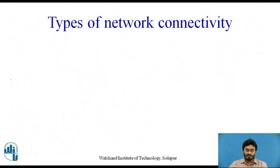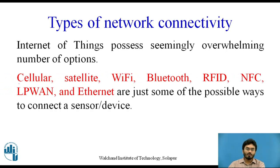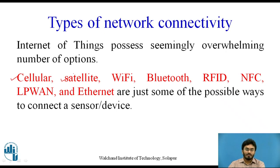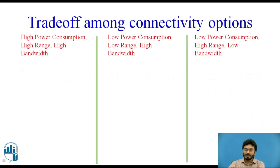Internet connectivity generally presents a seemingly overwhelming number of options in today's market. One of the most widely used internet connectivity options for IoT devices is cellular network. Very rarely, satellite internet is used — for example, sending industrial parameters over a ship in the middle of an ocean where no other connectivity exists. The third widely used option is Wi-Fi, and then Bluetooth. Apart from these, there are also NFC, RFID, LPWAN, and more.